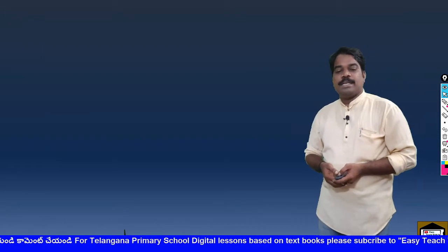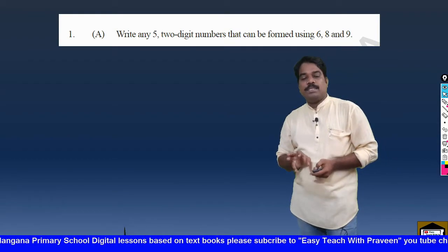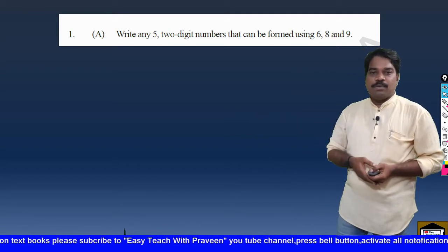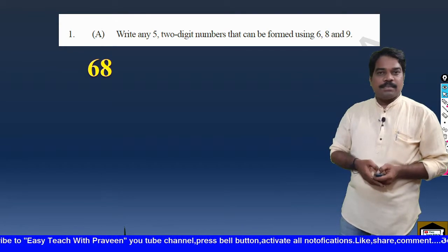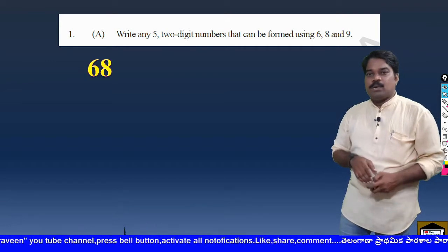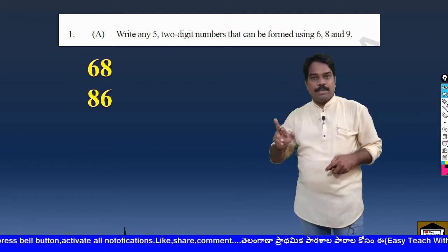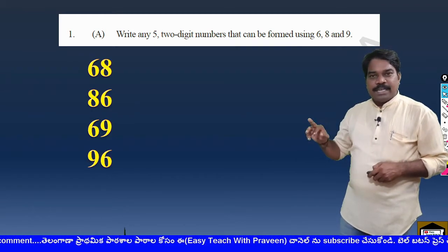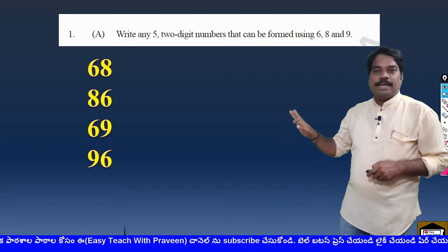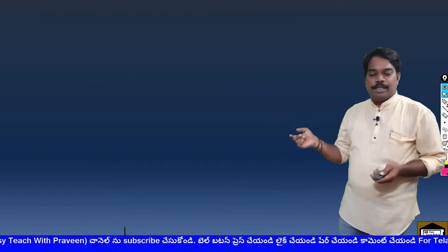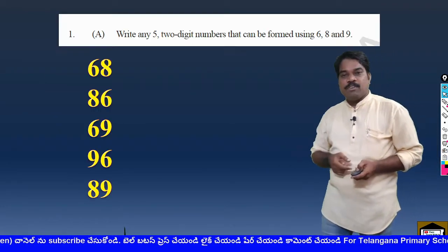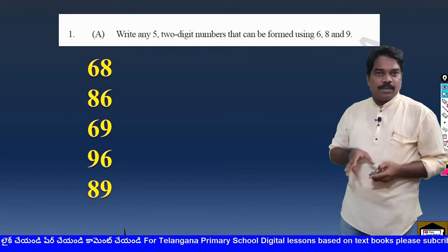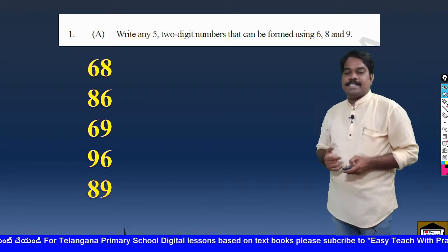Let us enter into the next activity. Write any 5 two-digit numbers that can be formed using 6, 8, and 9. We have to make numbers using them — that is 68 (using 6 and 8), 86 (reversed), 69 (6 and 9), 96 (9 and 6), and 89 (8 and 9). So I have made 5 numbers: 68, 86, 69, 96, and 89.